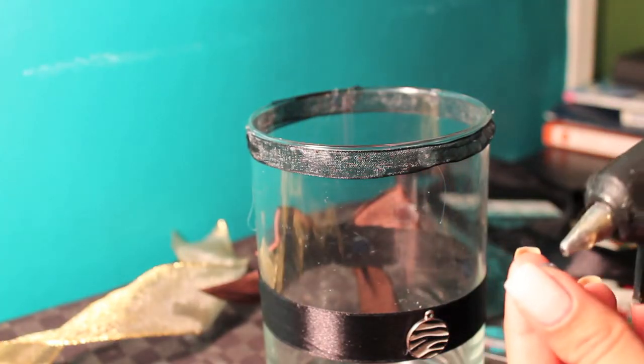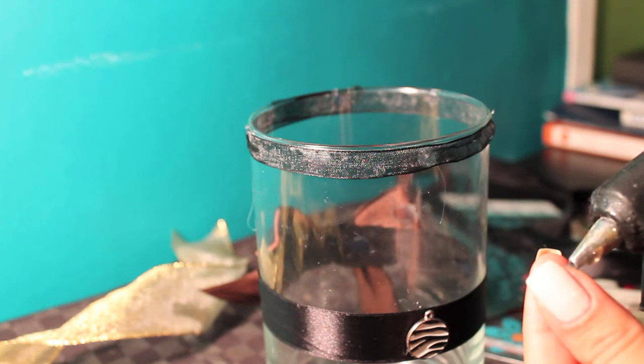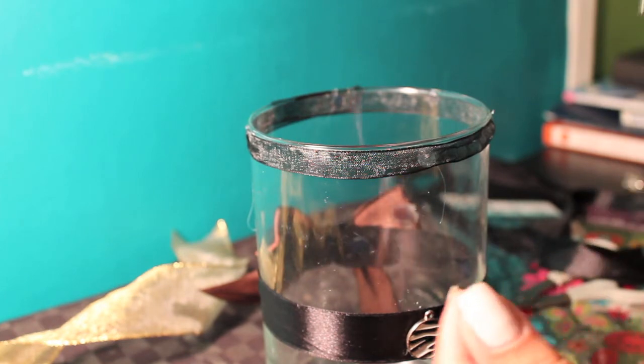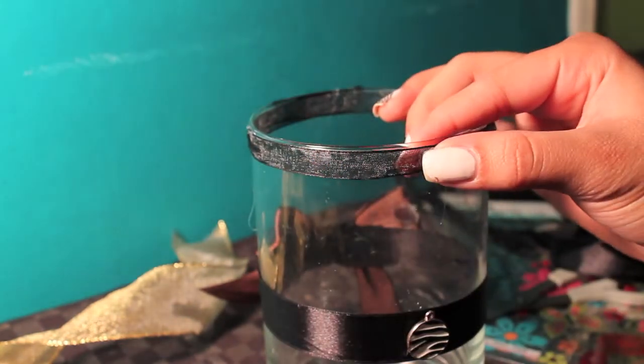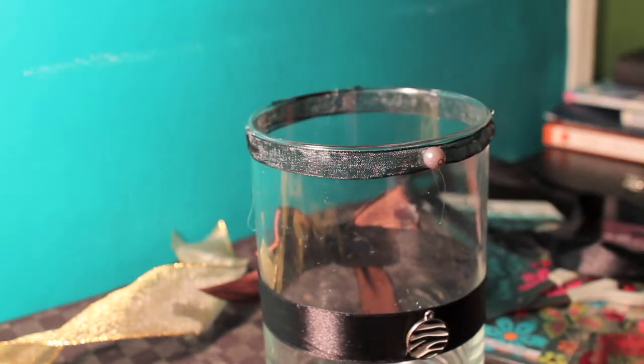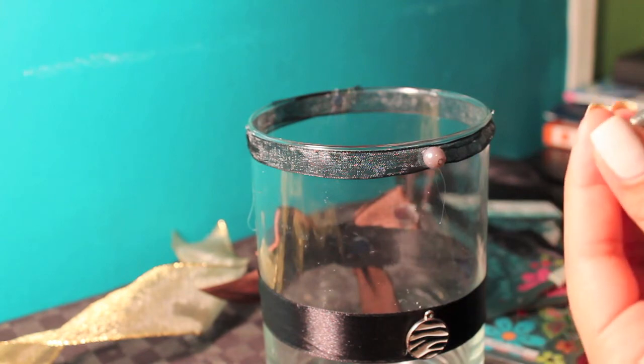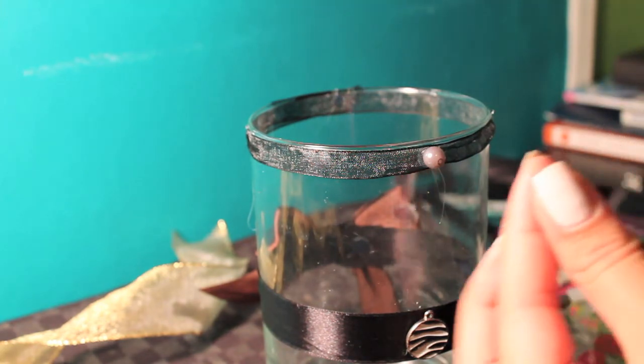Now take some beads and glue them around the first ribbon. This will not only make your vase look pretty, but it will also hide some of the glue marks that the ribbon has. For this part of the process, you have to have patience because the beads are really small and the glue might burn your finger.